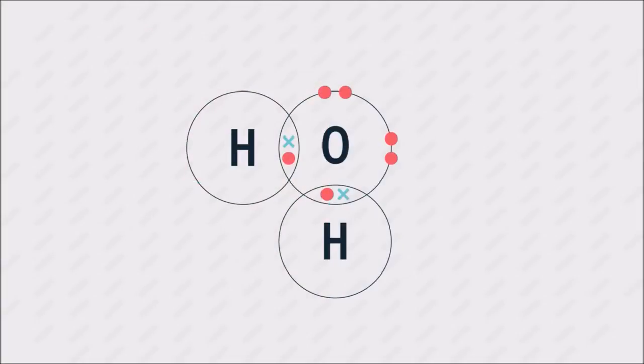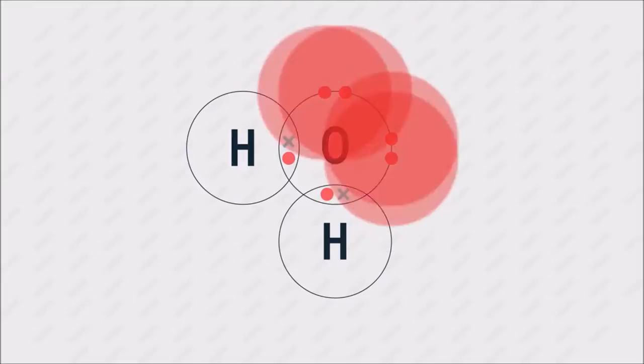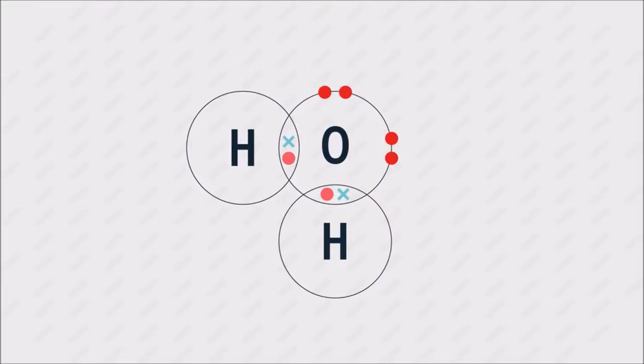The water molecule is bent in shape. Oxygen has two lone pairs. Negatively charged lone pairs are slightly attracted to the hydrogen atoms, so there is a weak attraction between molecules.